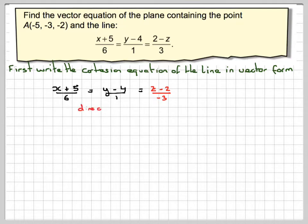I've written it like this. The directional vector is 6, 1, and minus 3. And the point we can get from doing the opposite signs of this: minus 5, 4, 2. Either that or you just write all these equal to lambda and rearrange them for each variable.